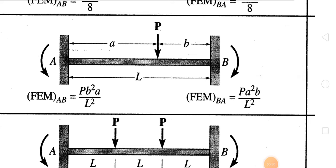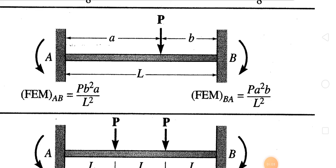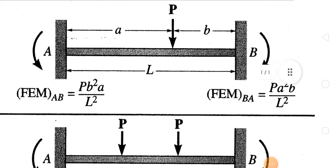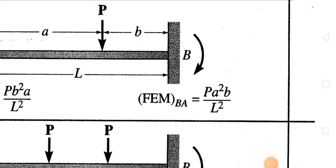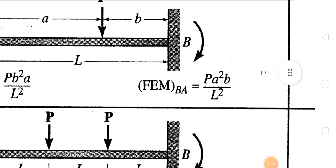The second condition is when we have a point load acting somewhere not in the middle. Let's say we have a distance 'a' from the A side and a distance 'b' from the B side. The formula for the moment at A side will be PB²/L², and at the B side it will be PA²B/L².